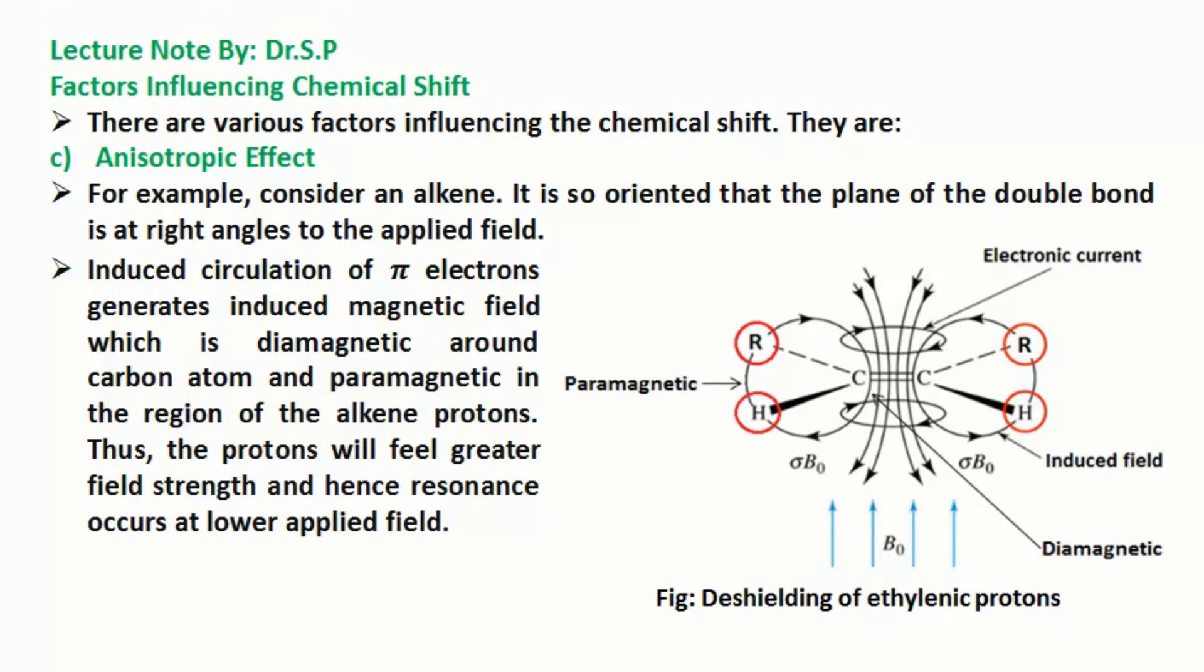For example, consider an alkene. It is so oriented that the plane of the double bond is at right angles to the applied field. Induced circulation of π electrons generates induced magnetic field which is diamagnetic around carbon atom and paramagnetic in the region of the alkene protons. Thus, the protons will feel greater field strength and hence resonance occurs at lower applied field.